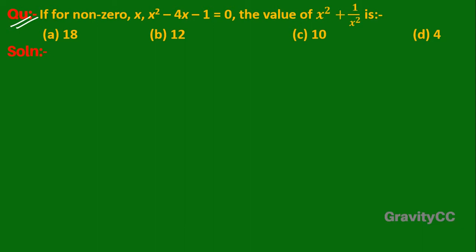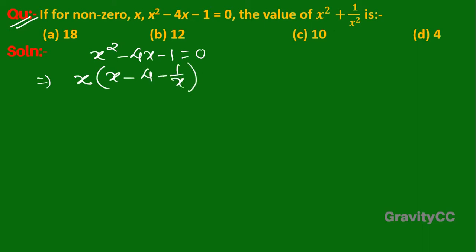Given that for non-zero x, x² - 4x - 1 = 0, we need to find the value of x² + 1/x². Taking x as common: x(x - 4 - 1/x) = 0, which implies x = 0 or x - 4 - 1/x = 0. Since x is non-zero, we cannot take x = 0.